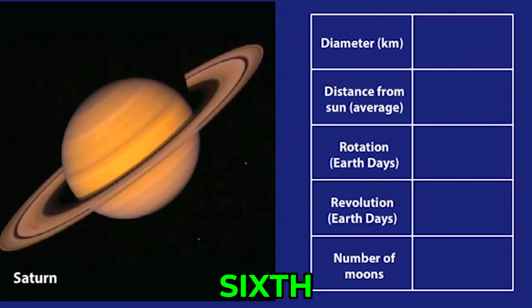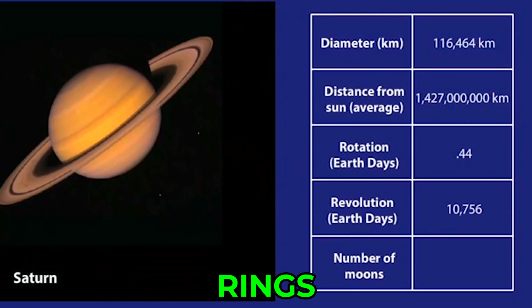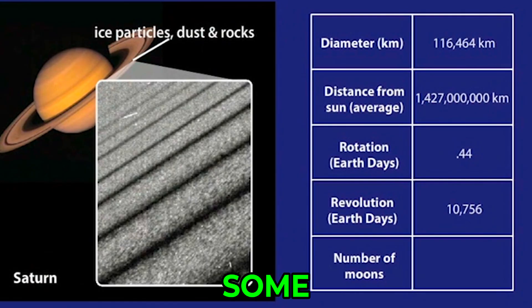Saturn, the sixth planet from the Sun, is the second largest planet in the solar system. Winds can blow as fast as 1,800 kilometers on this planet. Saturn's rings are primarily composed of ice particles with some dust and rock particles mixed in. There are 62 known moons that orbit Saturn.